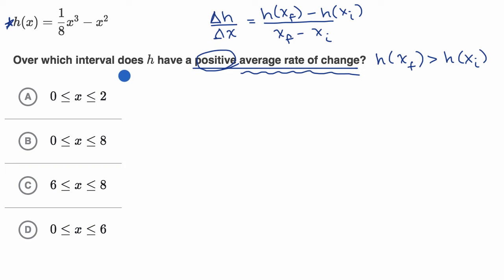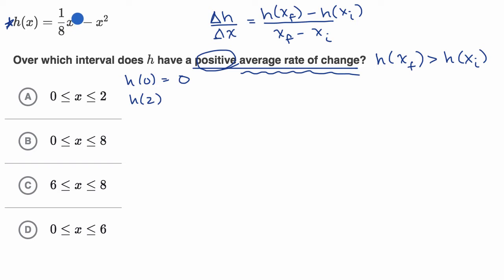So let's see if that's happening for any of these choices. h of zero is going to be equal to zero — one-eighth times zero minus zero. And h of two is equal to one-eighth times two to the third power, which is eight, so one-eighth times eight is one, minus four. So that's going to be negative three. We don't have a situation where h at our higher endpoint is larger, so this is a negative average rate of change. I'll rule this one out.